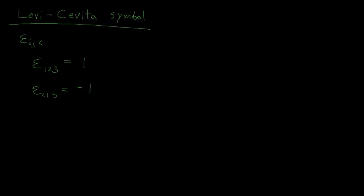This applies to any combination of 1, 2, 3. For example, epsilon 1, 3, 2: we got there by switching the 2 and the 3, so we pick up a negative sign, and it equals negative 1.